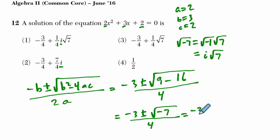So that tells me this is negative 3 plus or minus i times the square root of 7 over 4. Now that's not a choice here, but what they're doing is they're dividing both parts of the numerator, negative 3, and i times the square root of 7, by 4.